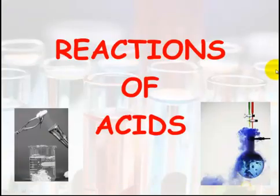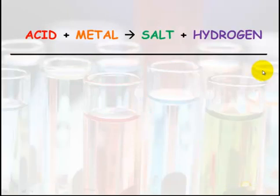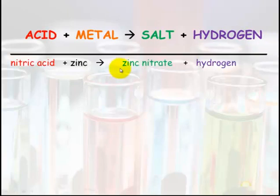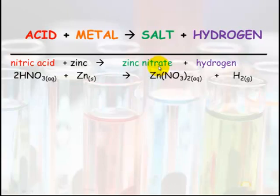Reactions of acids. An acid plus a metal when combined will always make a salt and hydrogen gas. An example: nitric acid plus zinc will make hydrogen gas and what's left, zinc nitrate.